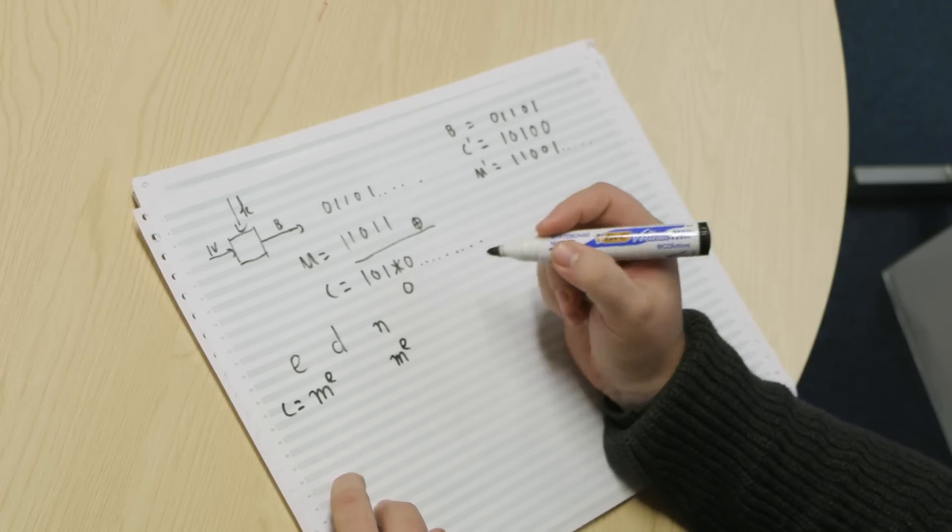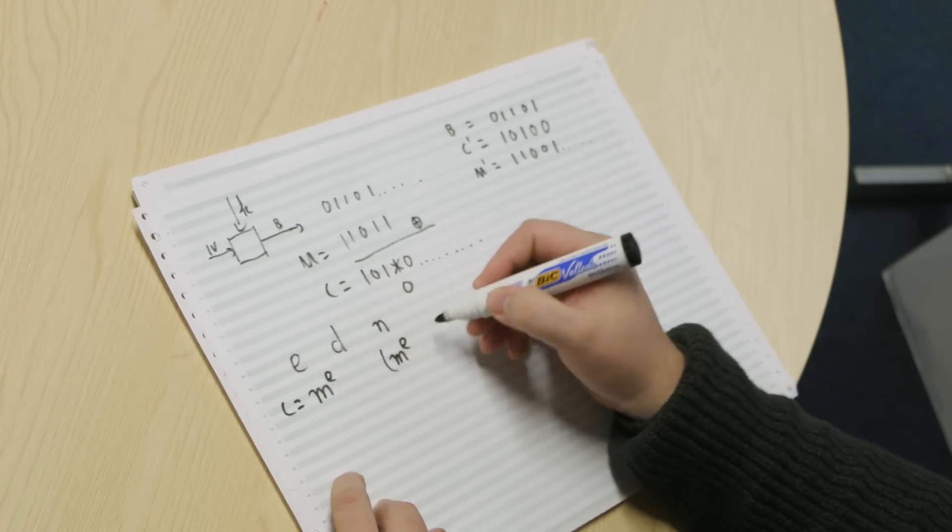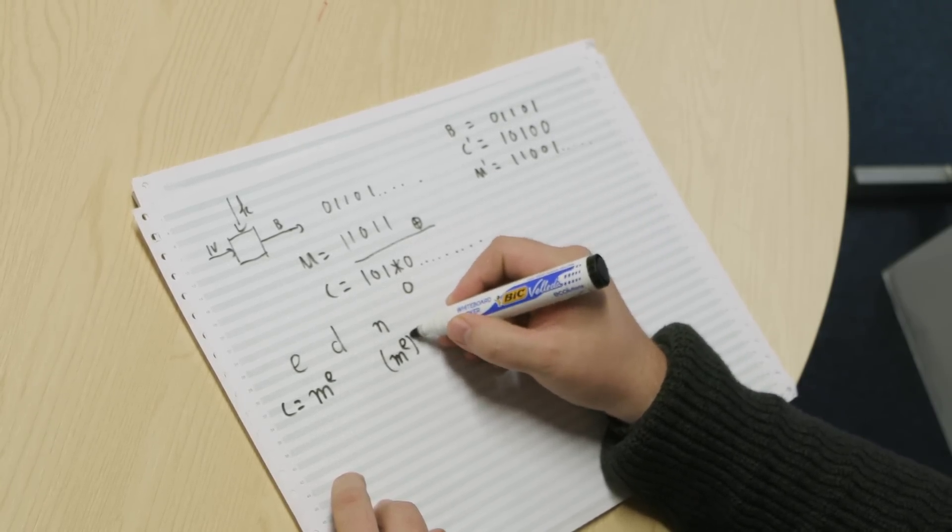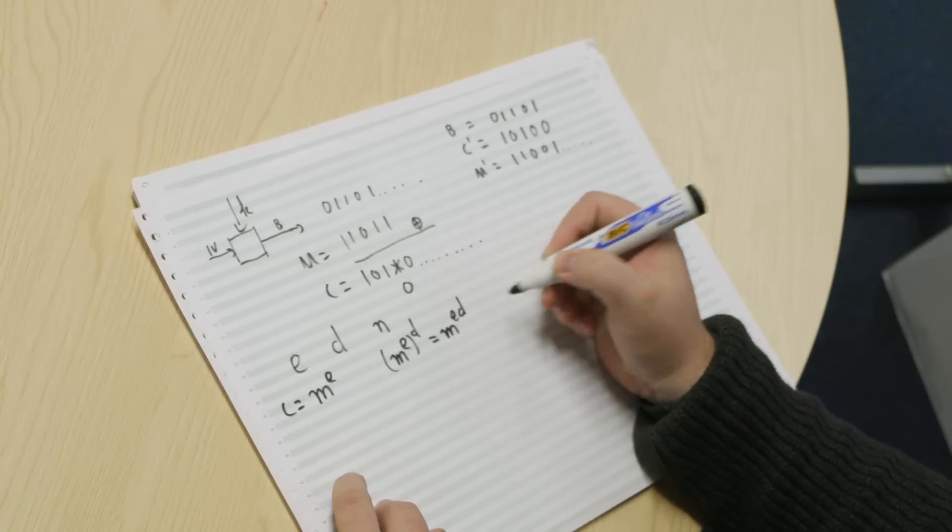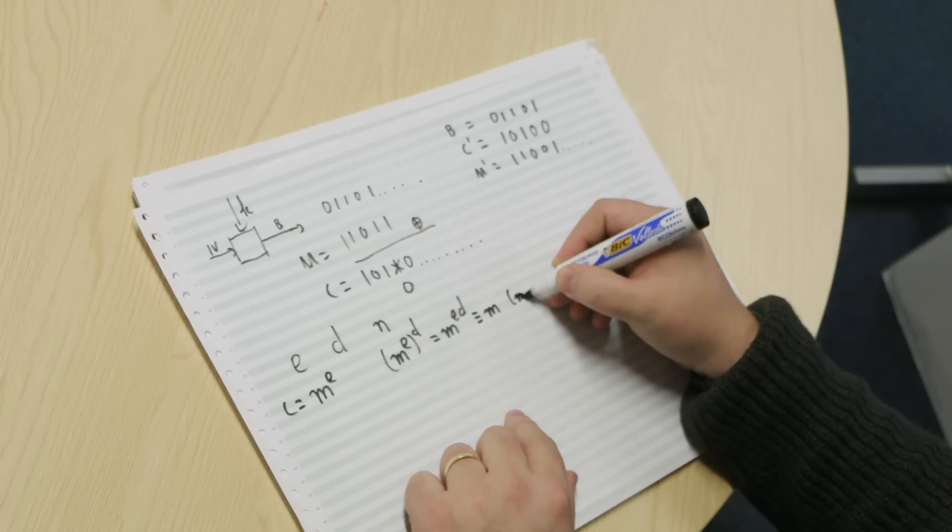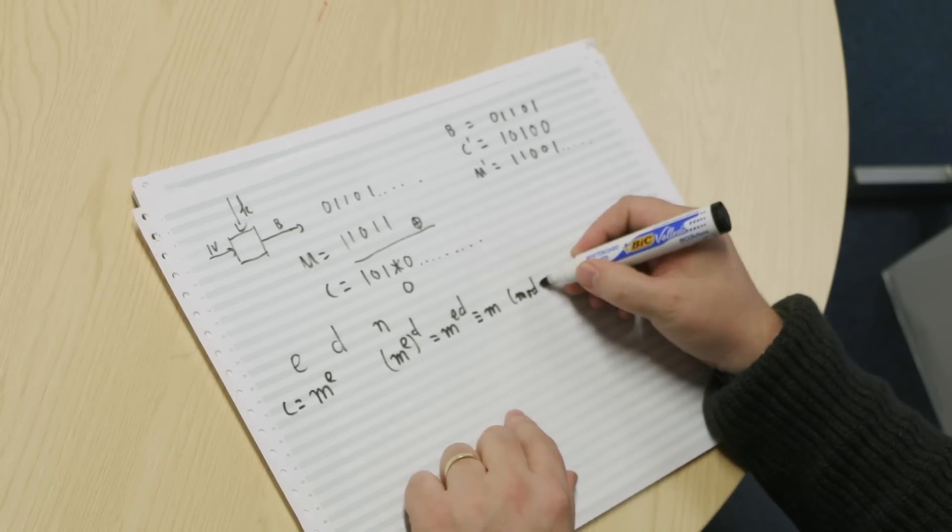So they take c and they raise it to the power d. So they get m to the power e to the power d, which is equal to m to the power ed. And then, and this was the special magic property of RSA, this is equivalent to m mod n.